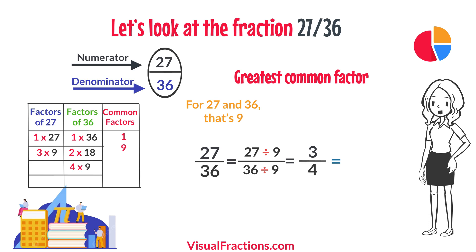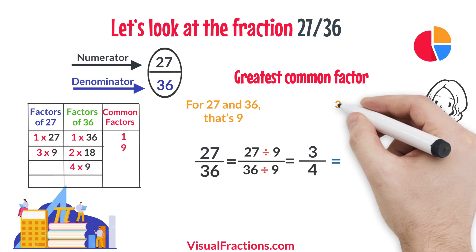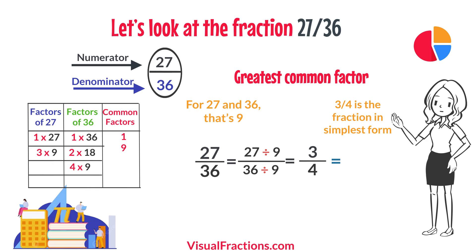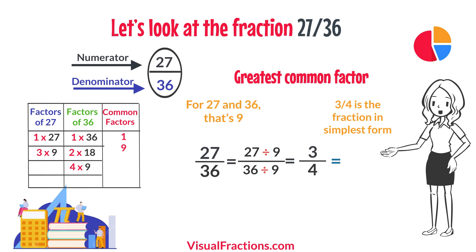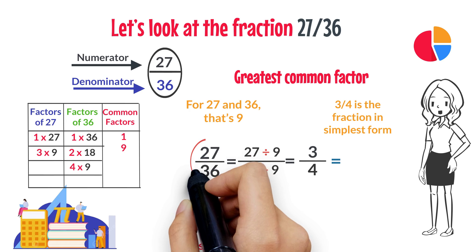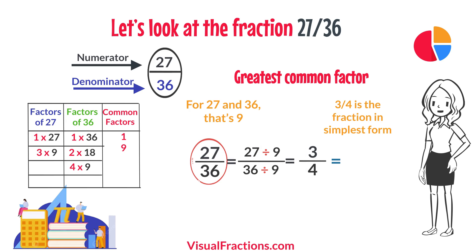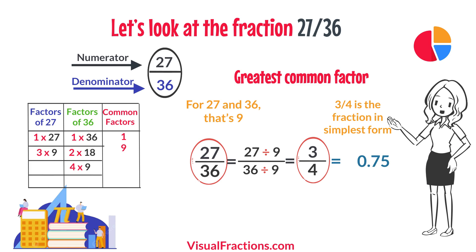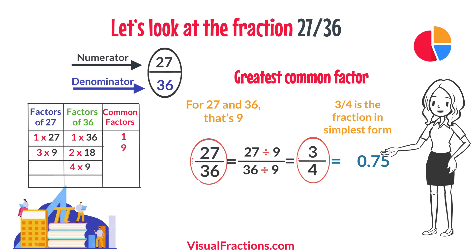So simplifying 27/36, we end up with 3/4, which is the fraction in its simplest form and cannot be reduced any further. It's interesting to note that both the original fraction 27/36 and the simplified fraction 3/4 have the same decimal value, which is 0.75. This shows that although their appearance may change, their value remains consistent.